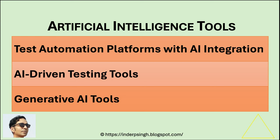Many AI tools, including free AI tools, are available to support your test automation. Test automation platforms with AI integration include tools that can generate scripts for automated testing tools like Selenium and Appium, with features like Intelligent Element Identification and Dynamic Script Adaptation. AI-driven testing tools include platforms with features like Test Case Prioritization, Automated Script Maintenance, and Defect Prediction.